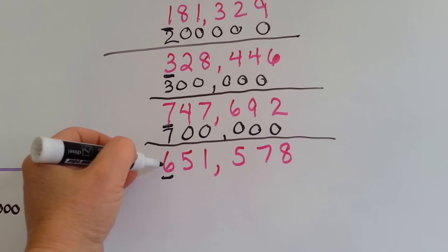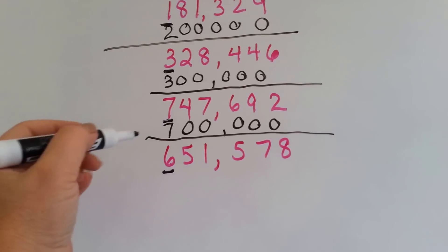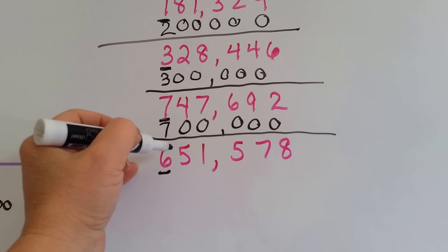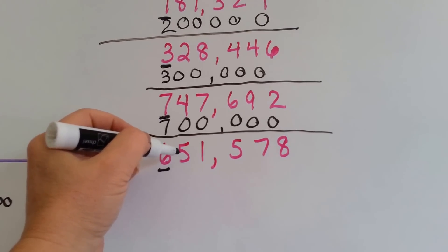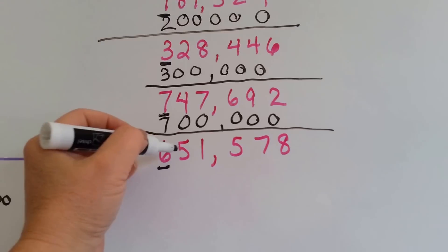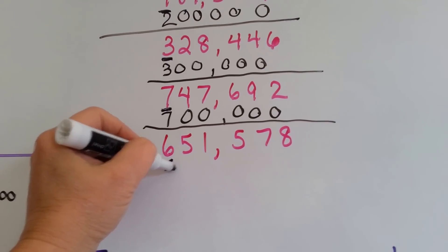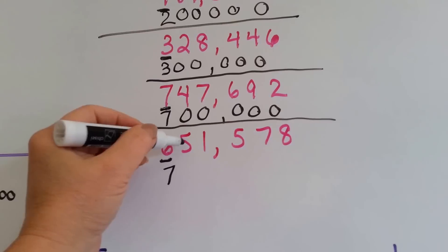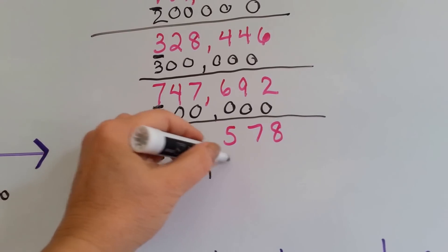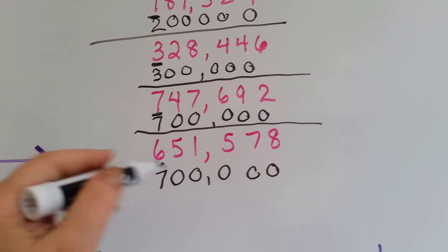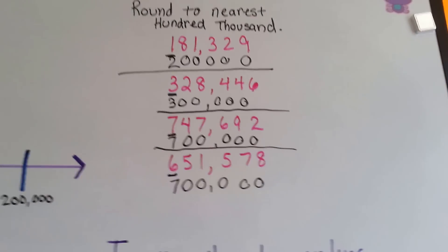How about this one? 651,578. The number to the right of the 6 is a 5. Remember our red rule: 5 says go up. So yes, 5 is telling the 6 to go up to a 7. 5 is done with his job — he becomes a 0 and everybody behind him becomes a 0. So it rounds to 700,000.